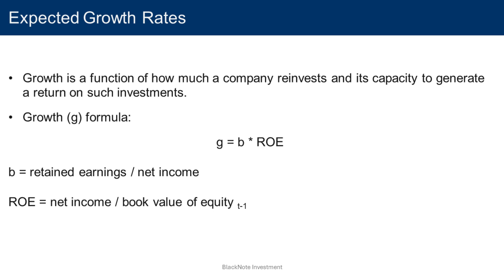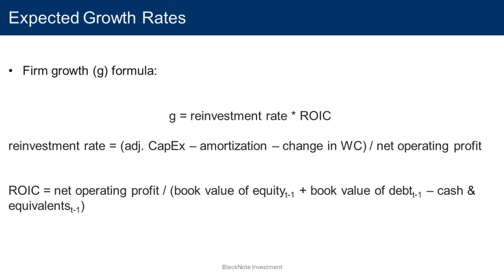Although financial literature mostly focuses on earnings growth derived from equity investments, there exists a different configuration of expected growth which considers the whole firm, including both equity and debt investments. In such a configuration, net operating profit replaces earnings and the expected growth rate is obtained by multiplying the reinvestment rate by the return on invested capital, which indicates the return generated by both equity and debt investments.